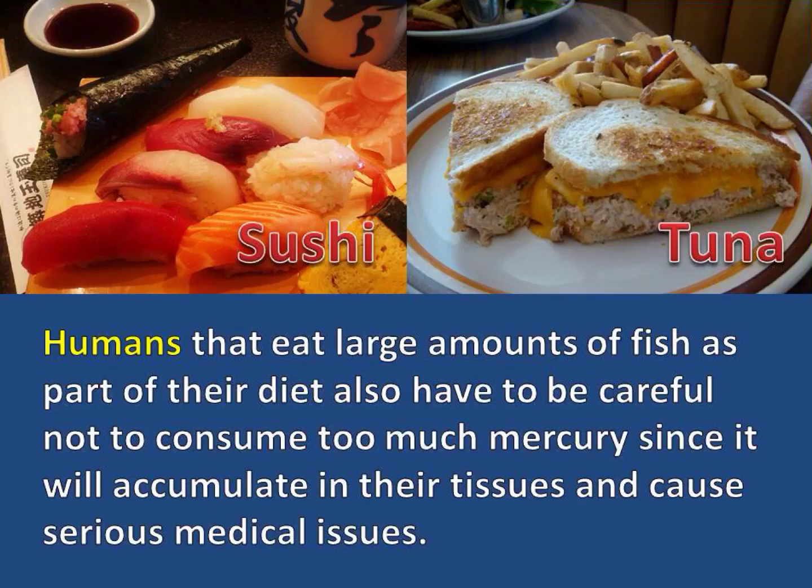Don't forget that humans are at the top of the food chain. So, humans that eat large amounts of fish as part of their diet also have to be careful not to consume too much mercury, since it will accumulate in their tissues and cause serious medical issues.